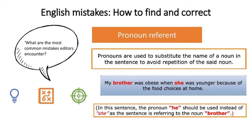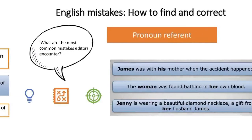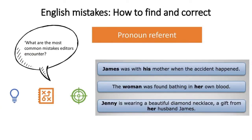Let's look at pronoun reference. Pronouns in English are used to substitute the name of a noun to avoid repetition. For example: 'My brother was obese when he was younger because of the food choices at home' — the pronoun 'he' should be used because the sentence refers to 'brother.' Lots of languages don't have gender differences, so this can be an issue for international authors writing in English. 'James was with his mother when the accident happened.' 'The woman was found bathing in her own blood.' 'Jenny is wearing a beautiful diamond necklace, a gift from her husband, James.' These are common mistakes we encounter in editing.